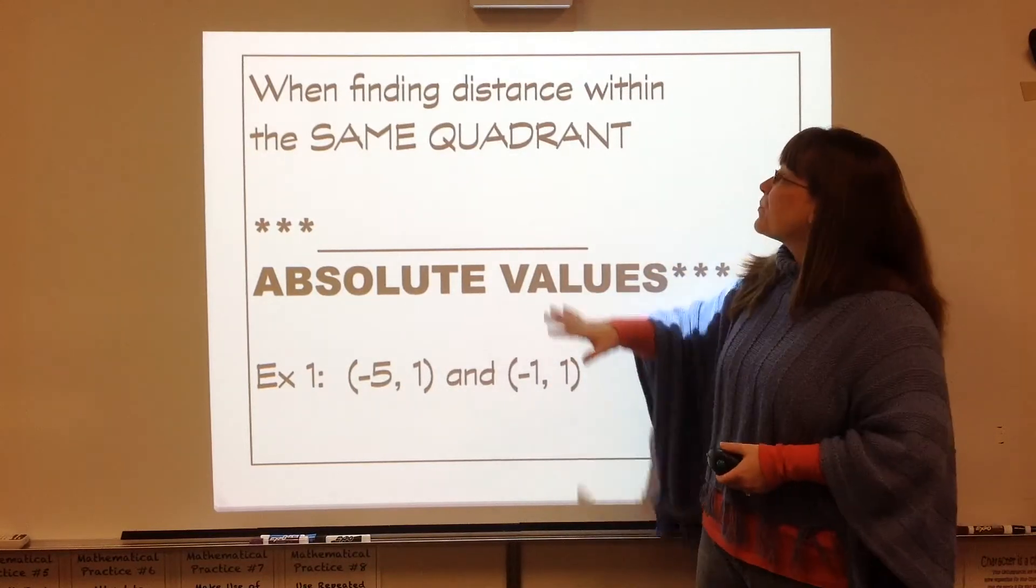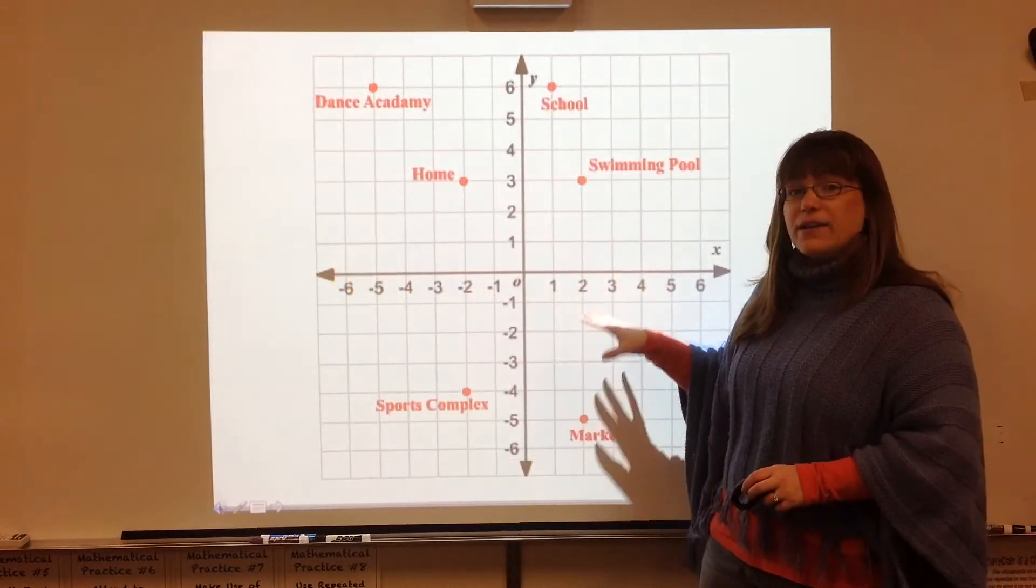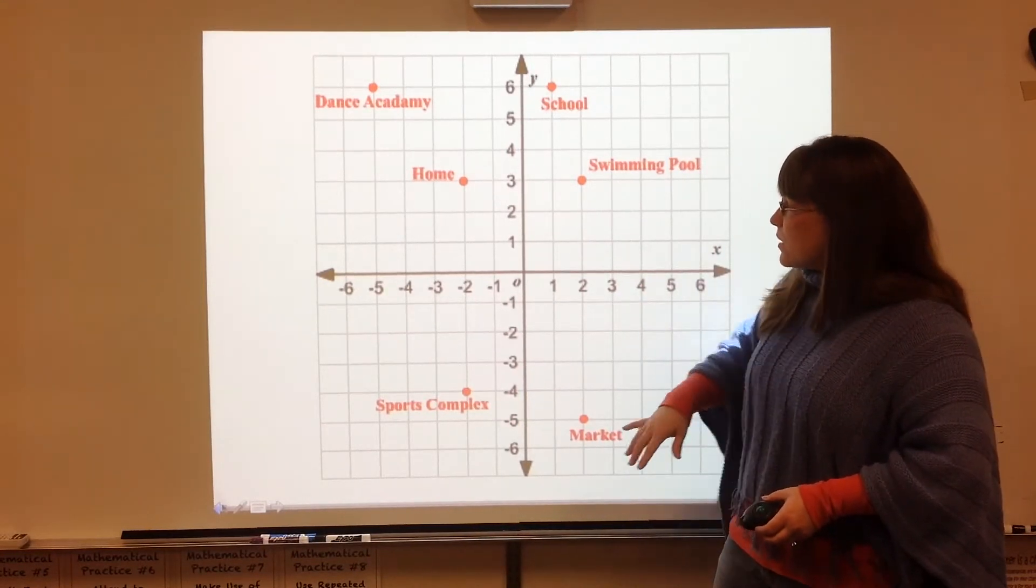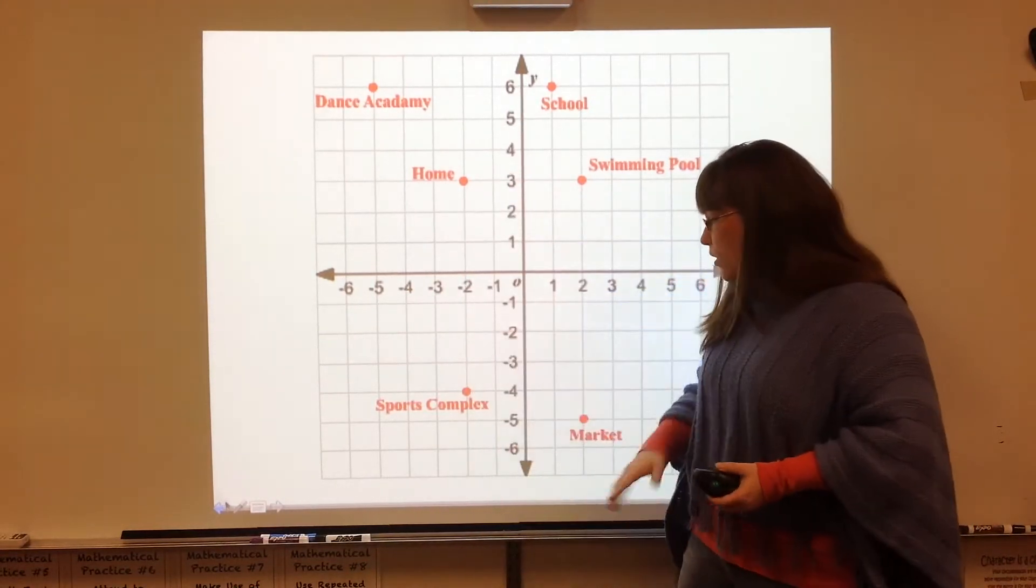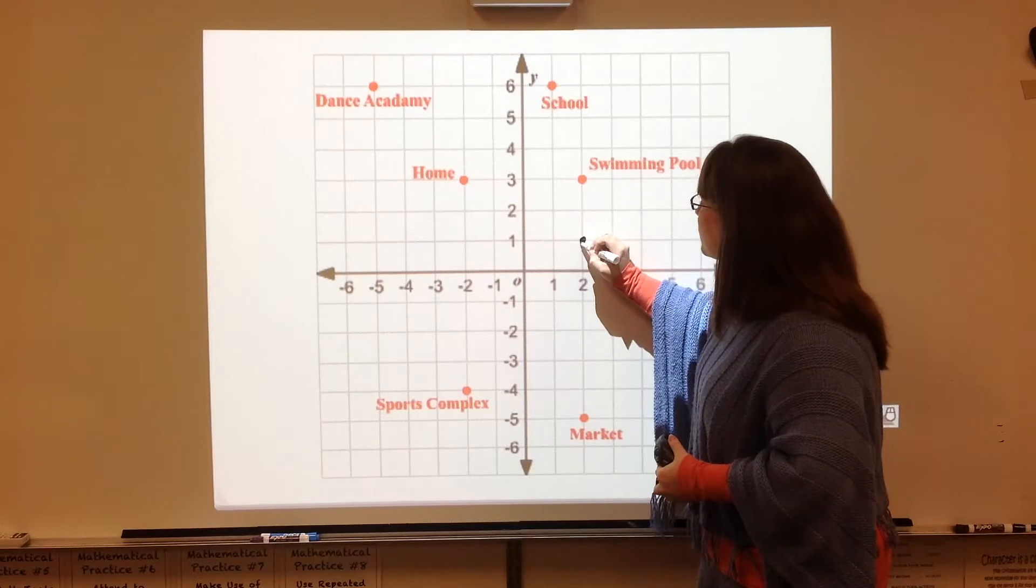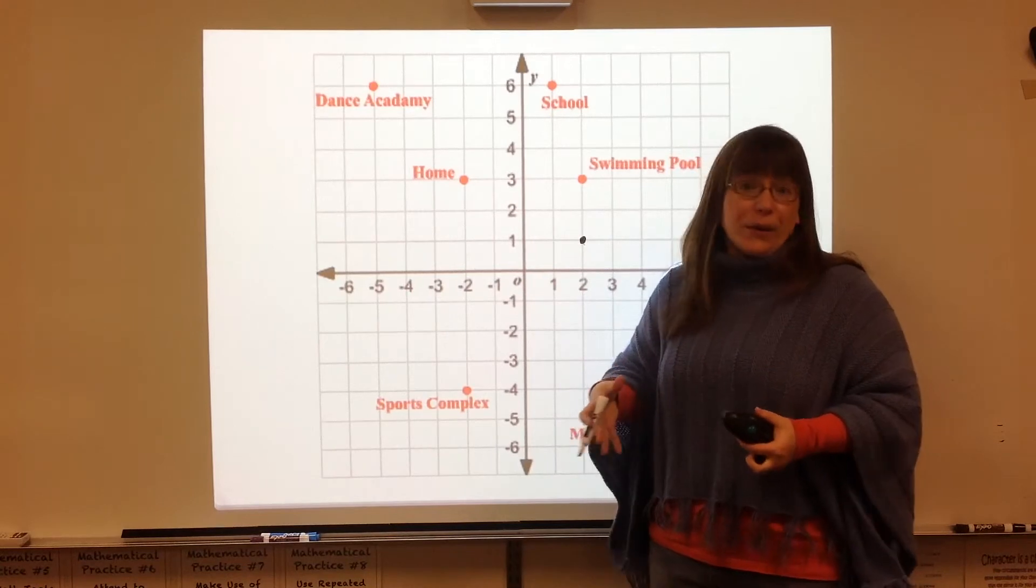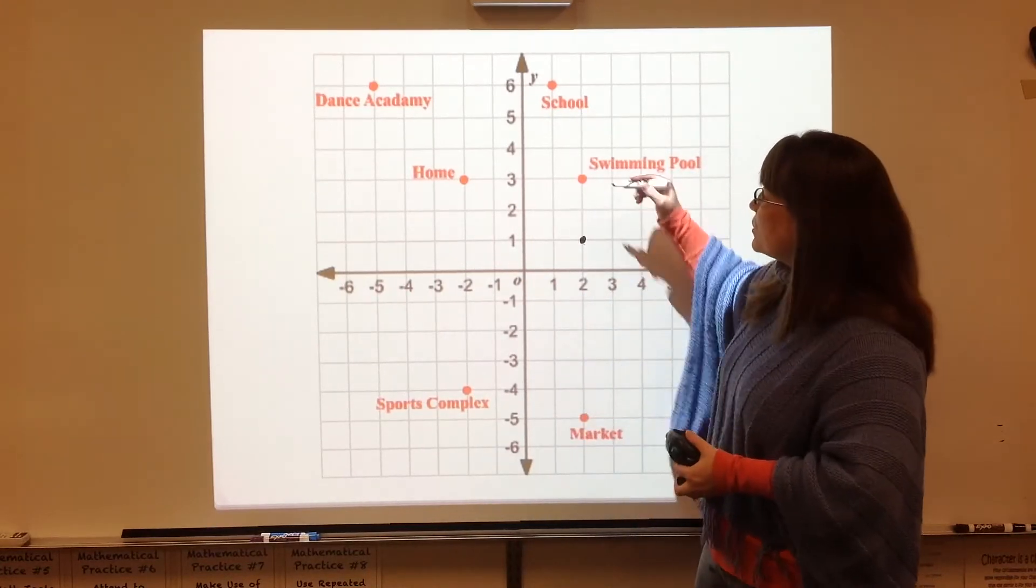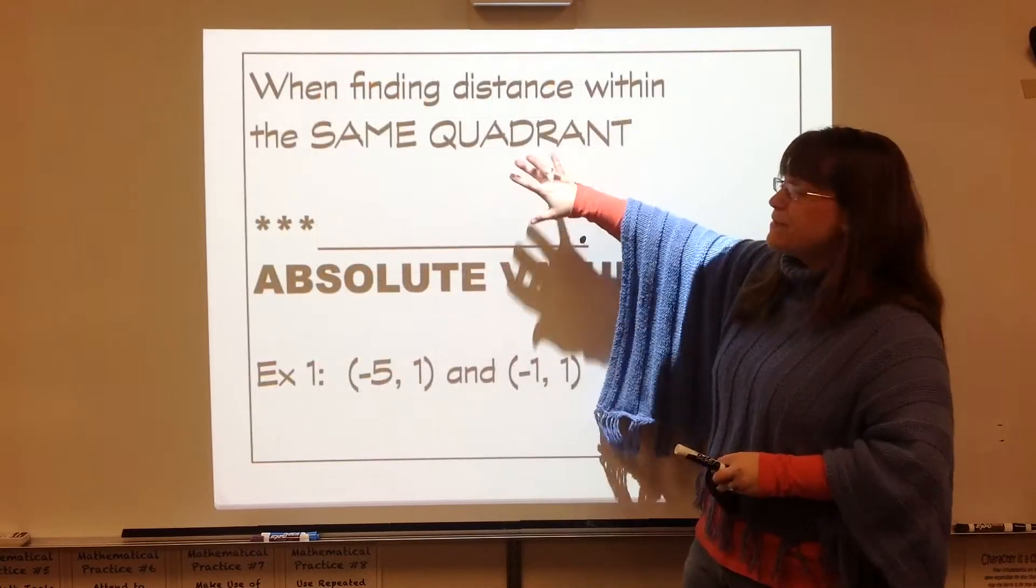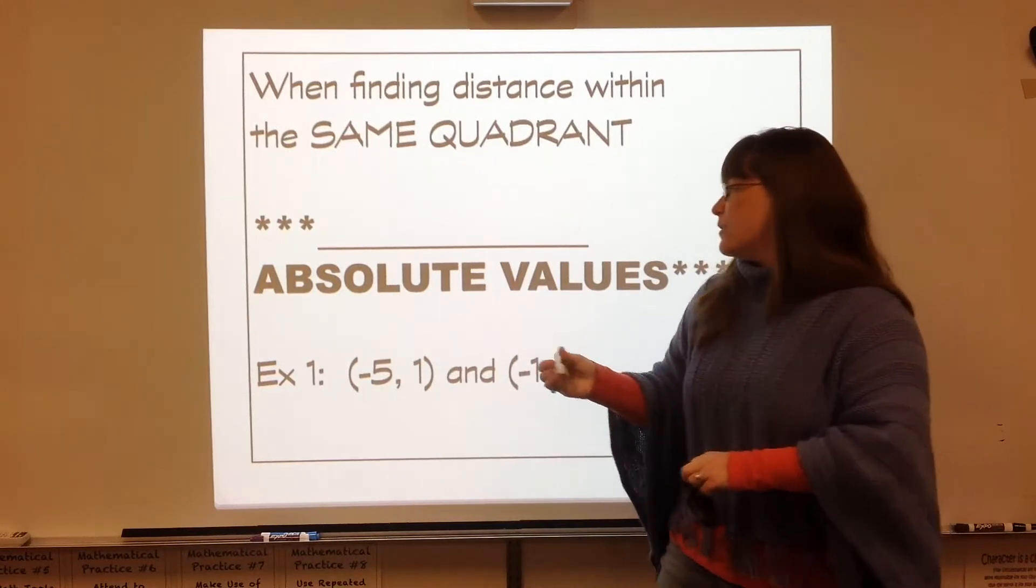So this is another way to check and make sure that you found the right distance. And it involves absolute values. If you remember, this grid had different points in different quadrants. We could find a distance that is in two different quadrants, or I could have a playground right here, and I could find the distance within the same quadrant. So those are the two different scenarios that you'll have to find distance between two points. The two points could be in the same quadrant, or they could be in two different quadrants. So when they're in the same quadrant, you have to subtract absolute values.